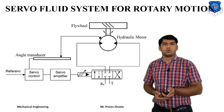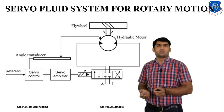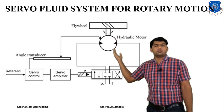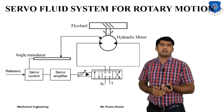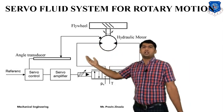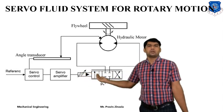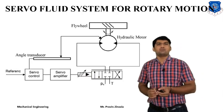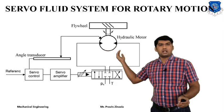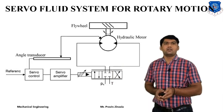A second example is a servo fluid system for rotary motion, using a 4/3 direction control valve and a bi-directional hydraulic motor. When pressurized fluid is supplied in the first position, the motor starts rotating. To achieve the required rotation speed and torque, a signal is passed from the motor to the transducer and from the transducer to the servo controller. The servo controller supplies the signal to the servo amplifier, and the amplifier supplies it to the direction control valve. According to the requirement or precise value, the valve changes position to change the hydraulic motor RPM or torque.